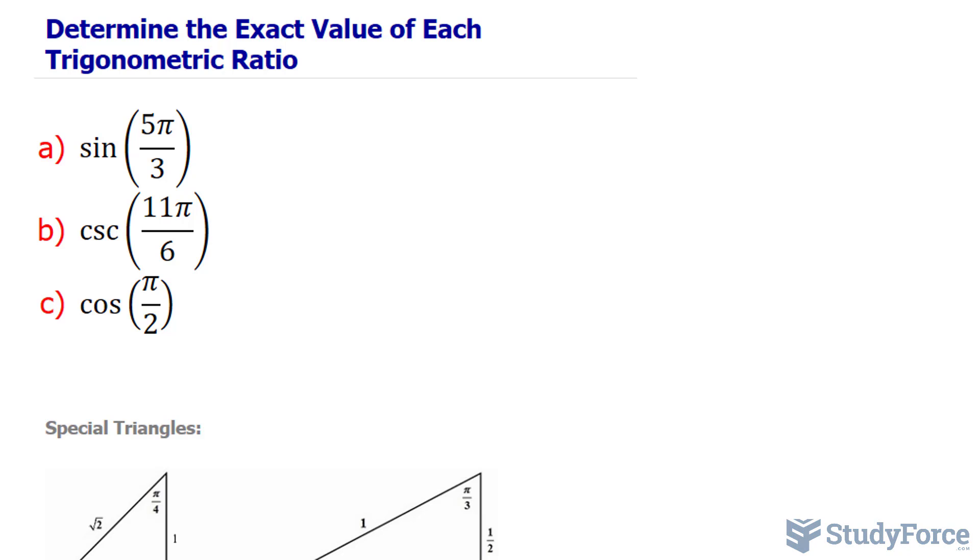Our goal is to find the ratio that represents sine at an angle of 5π over 3. It's important to note that most scientific calculators can actually give you the ratio by substituting this value in for sine, but we want to avoid using a calculator. So how do we do it?